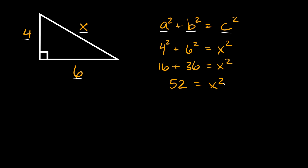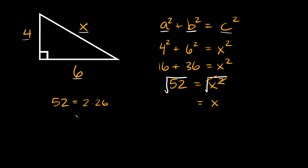Now to solve for x and get rid of this exponent, we just need to take the square root of both sides. The radical and the squared exponent cancel out, so we're left with x is equal to the square root of 52. That's not a perfect square, but there are different ways we can break it down. So 52 — we could say that's the same as 2 times 26, or we could say 52 is the same as 4 times 13.